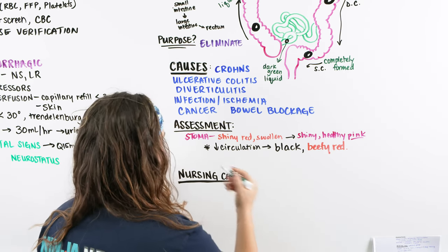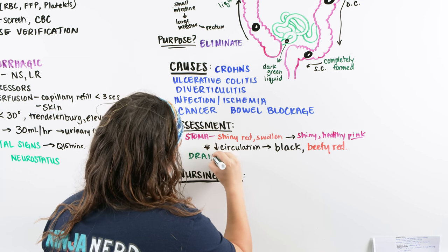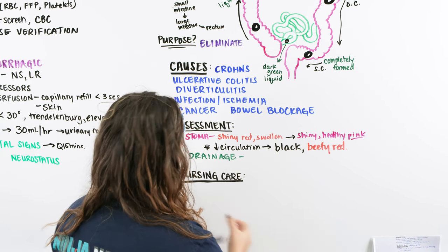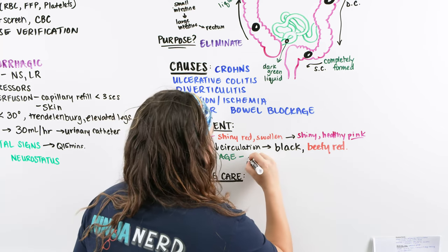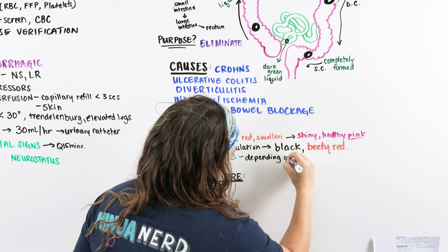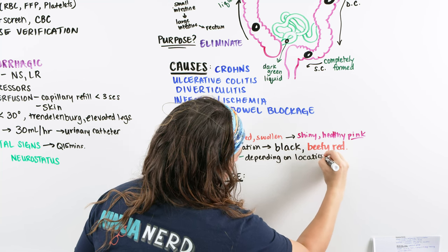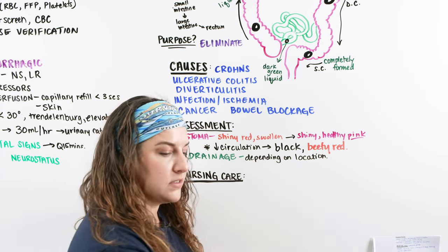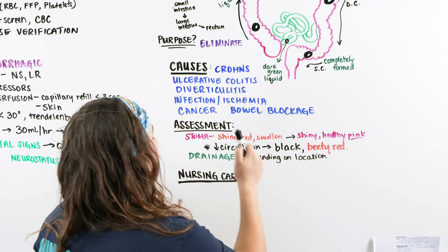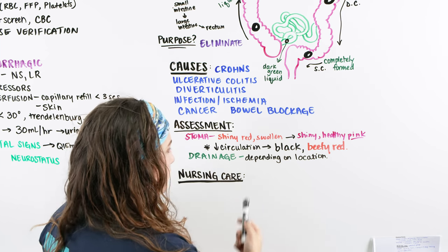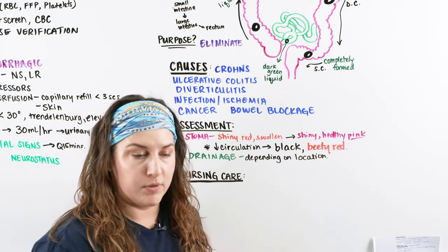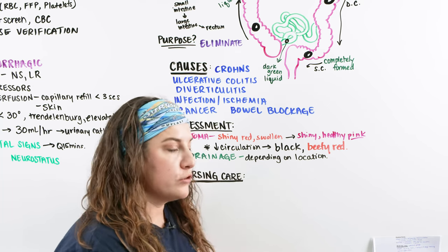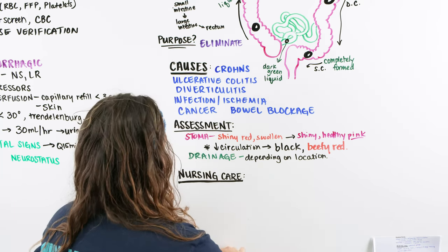After stoma assessment we want to think about the drainage assessment. Drainage appearance depends upon the location of the ostomy — if it is an ileostomy that will be dark green, but if it is something in the descending colon it will be closer to looking like normal fecal material. We also want to assess the abdomen — looking, listening, and feeling — as part of our overall assessment.